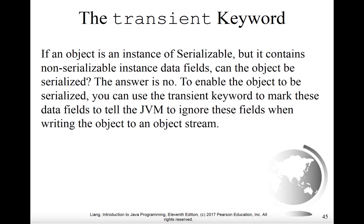Sometimes you may have an object where most of it can be serialized, but there might be something in it that is not able to be serialized. In that case, strictly speaking, the object cannot be serialized. However, there is a workaround. There's a keyword, transient, which you can use to mark such data fields that aren't serializable, so that the JVM — the Java Virtual Machine — will ignore those fields when attempting to serialize the object to an object stream.